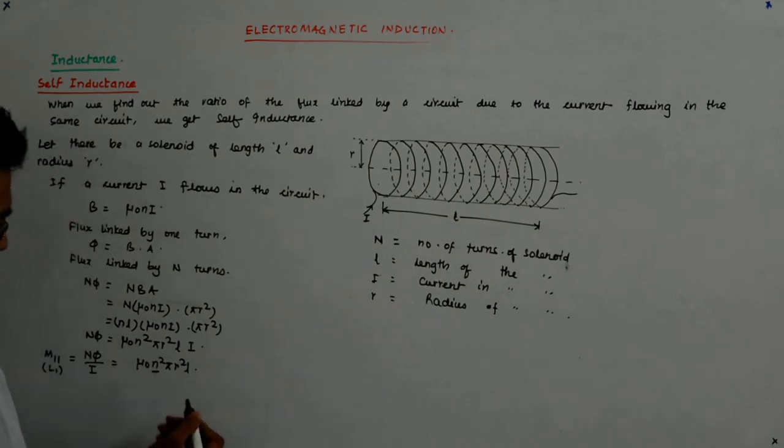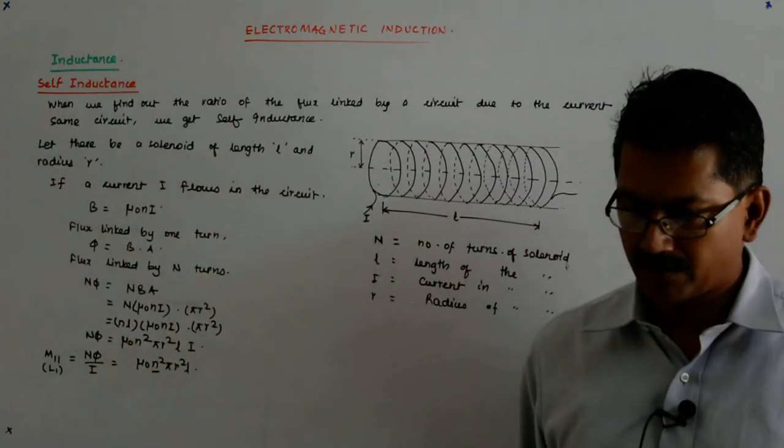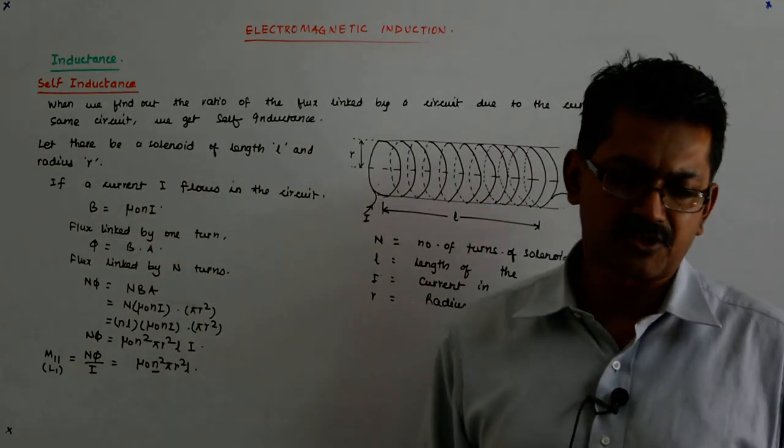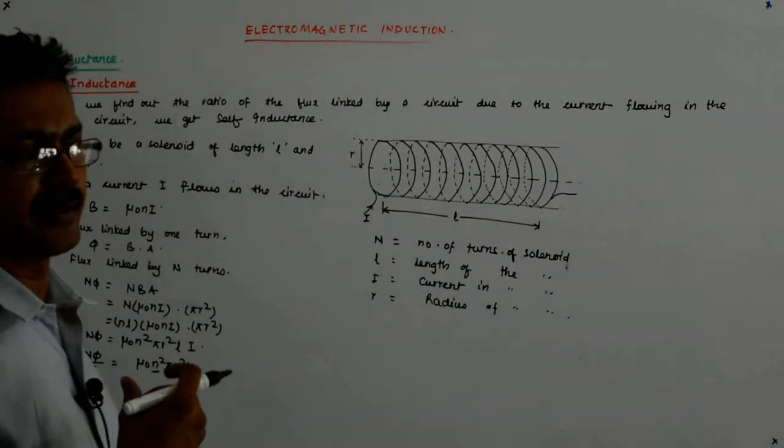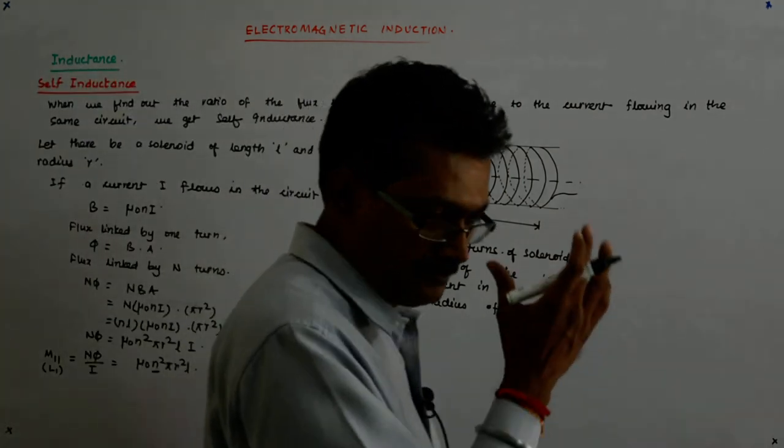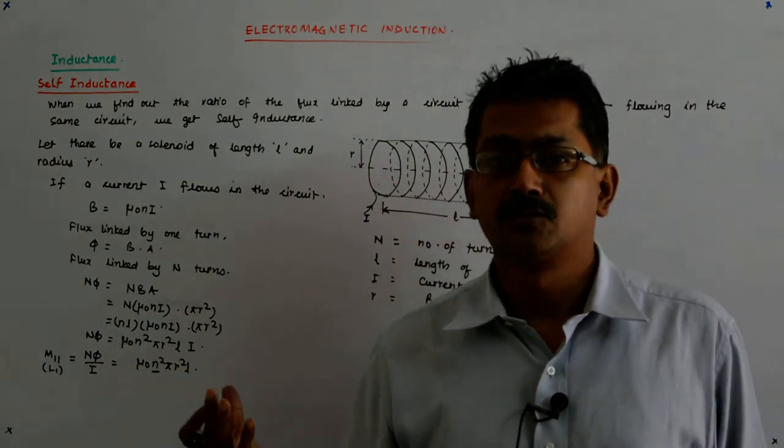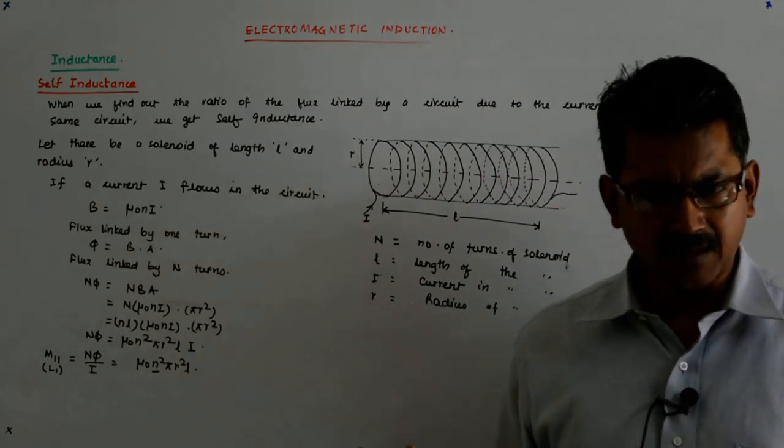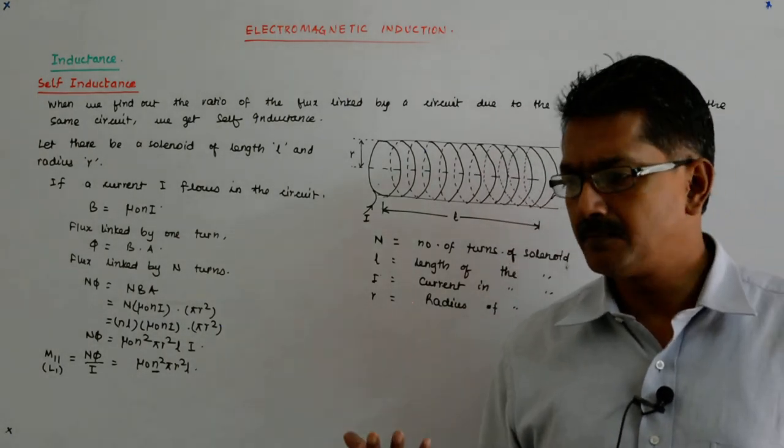Now, one thing that we should understand: if N becomes double, your inductance becomes four times. So you should keep that in mind. Many times they ask a simple one mark question: what happens if I make the number of turns twice, the length remaining the same? So N by L obviously becomes double, small n becomes double. You understand? The inductance will become four times.